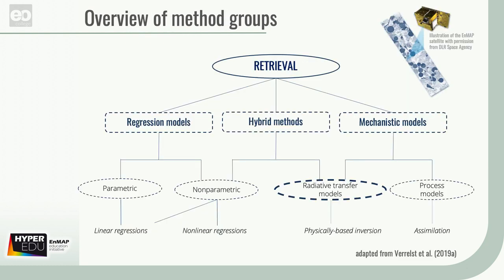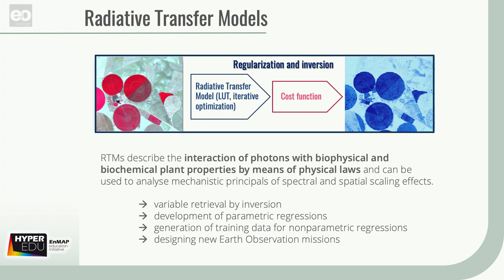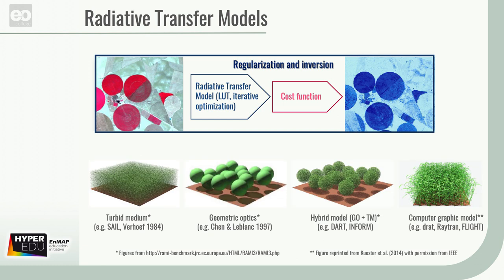While the group of mechanistic models also refers to process or crop growth models, we will only discuss physically based radiative transfer models, or RTMs for short here. RTMs describe the interaction of photons with biophysical and biochemical plant properties by means of physical laws, and can be used to analyze mechanistic principles of spectral and spatial scaling effects. They are widely used for variable retrieval by inversion, but also for the development of parametric regressions, generation of training data for nonparametric regressions, and for designing new earth observation missions. Exemplary groups of RTMs are turbid medium, geometric optics, hybrid models, and computer graphic models.